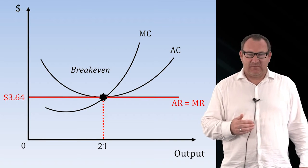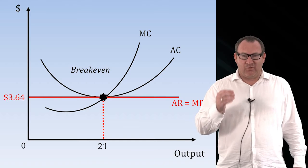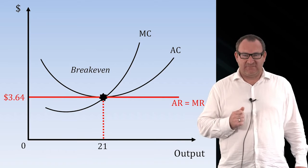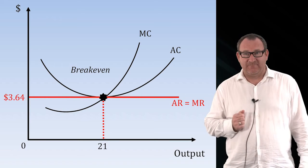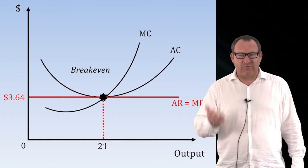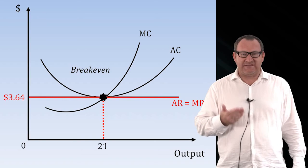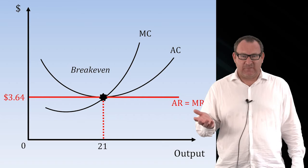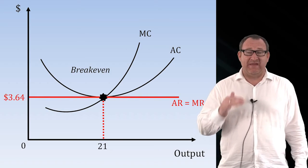At that point, breaking even — where the optimal output is at the point where the average revenue equals the average cost — there is no incentive for any new firms to enter the marketplace. In that case, supply won't fall any further, and so the equilibrium market price won't fall any further. We would say that the price will stabilize at this level — at the point where all of the firms are just breaking even.